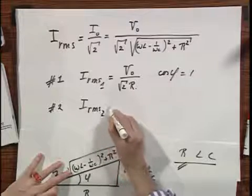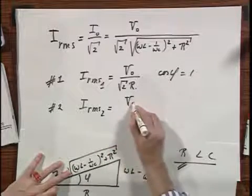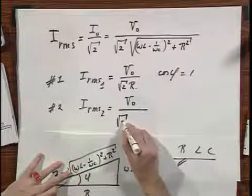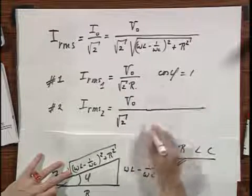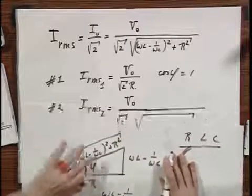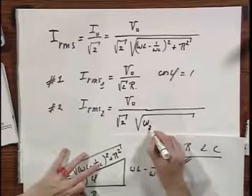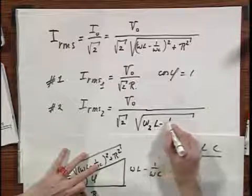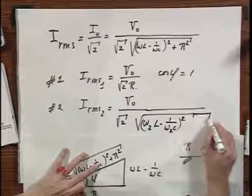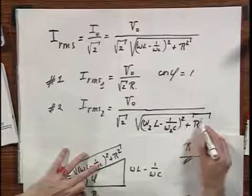If I now go to station number 2, I RMS for station number 2 equals V0, we have assumed that the V0's are the same, square root of 2. And now, I get this square root, which is now omega 2 L minus 1 over omega 2 C squared plus R squared.